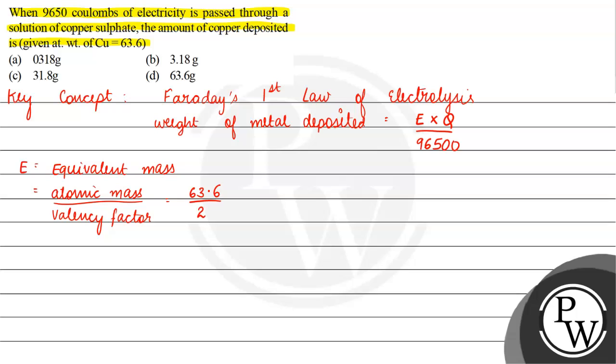This is equivalent mass, then Q is the charge and charge is given to us 9650 coulombs. And 1 faraday is equal to 96500.